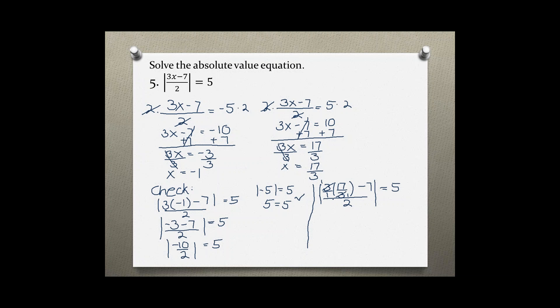3 goes into 3 one time, and then multiplying our leftover numbers, which leaves us with 17 over 1, or just 17, and this looks much cleaner.